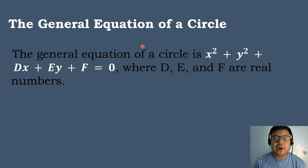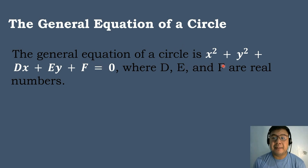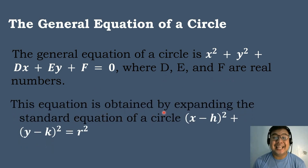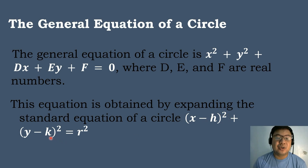Let's have the general equation of a circle. The general equation of a circle is in the form of x squared plus y squared plus dx plus ey plus f is equal to 0, where d, e, and f are real numbers. This equation is obtained by expanding the standard form of the equation of a circle: the quantity x minus h to the second power plus the quantity y minus k to the second power equals r to the second power.